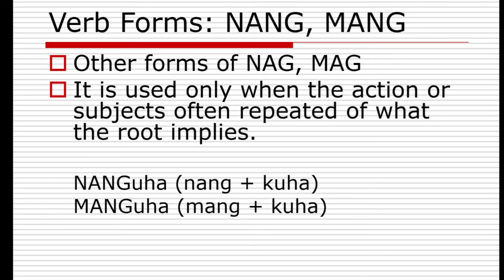'Nang' and 'mang' are also other forms of 'nag' and 'mag'. These are used when the action or subject often repeats what the root word implies. For example, 'nanguha' comes from 'nang' plus 'kuha', and 'manguha' comes from 'mang' plus 'kuha'.